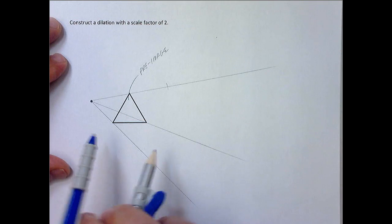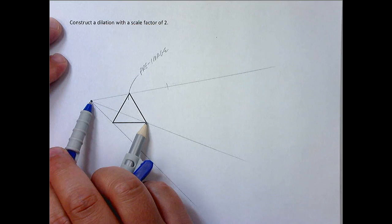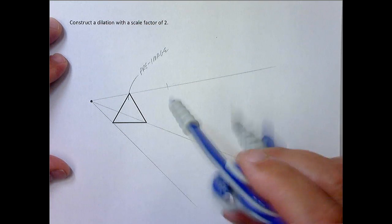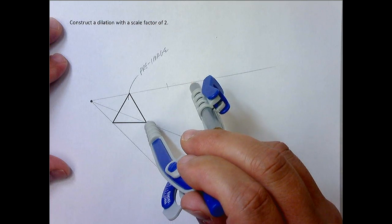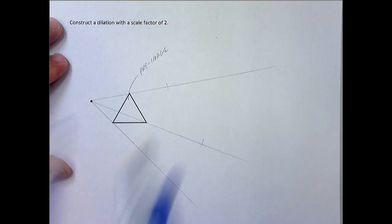Do it again. So you're going to need to pull your compass apart a little bit to get to this guy. Once you have it lined up, put the point on that vertex and again, swoop a little arc.